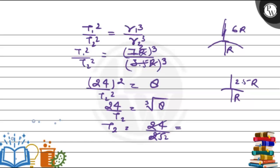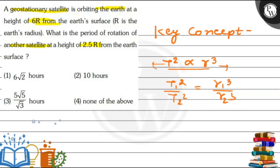So T2 will become 24 upon 2 under root 2. The 2 cancels, giving 12, that means 12 upon root 2. If we rationalize it with root 2 over root 2, this will be cancelled by 6 and the time period for the second satellite will be 6 root 2 hours. Let's match the option: 6 root 2 hours, option first is the correct option. I hope you have understood it well, best of luck.